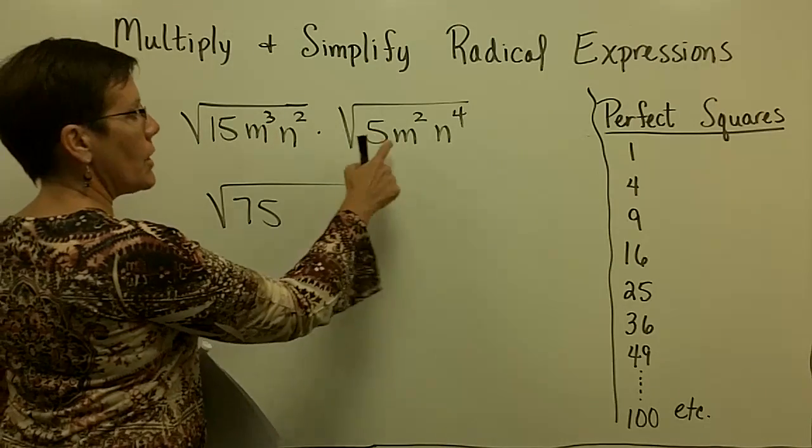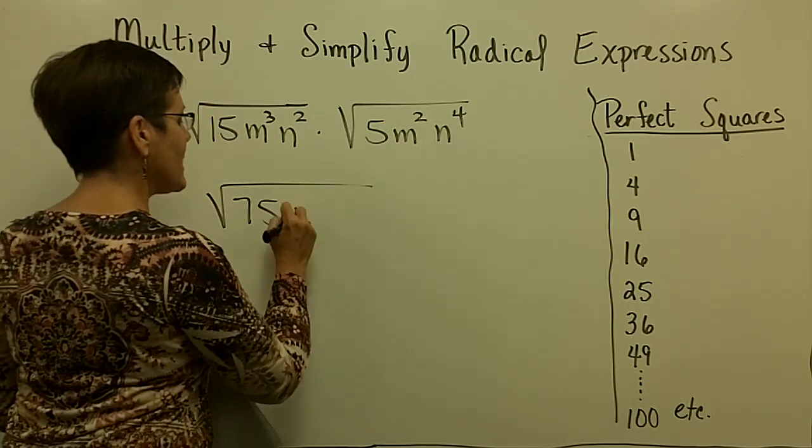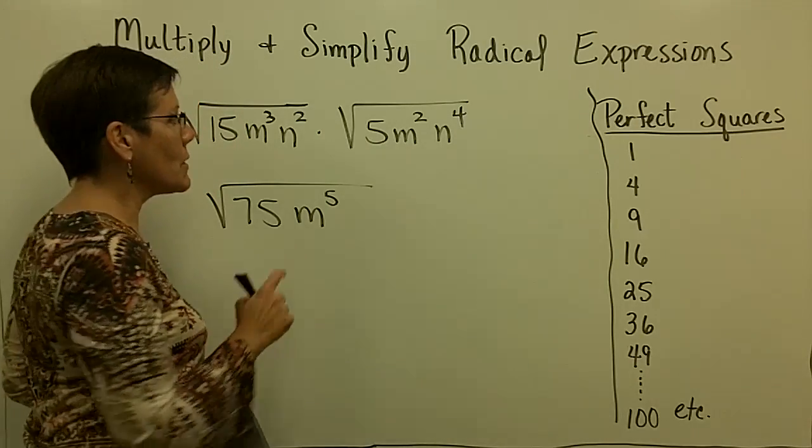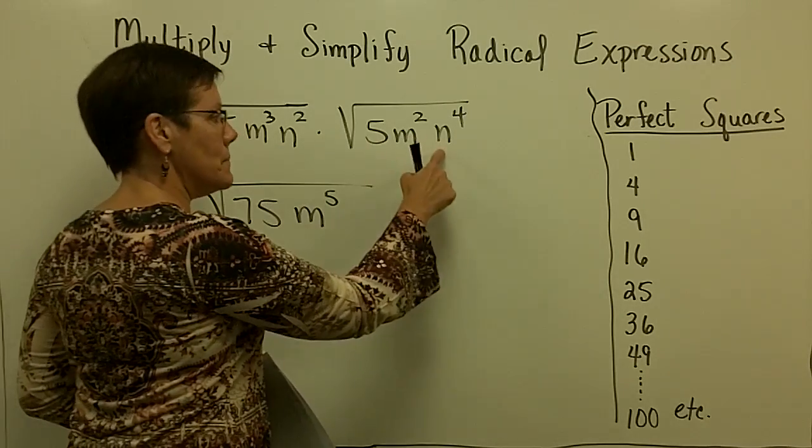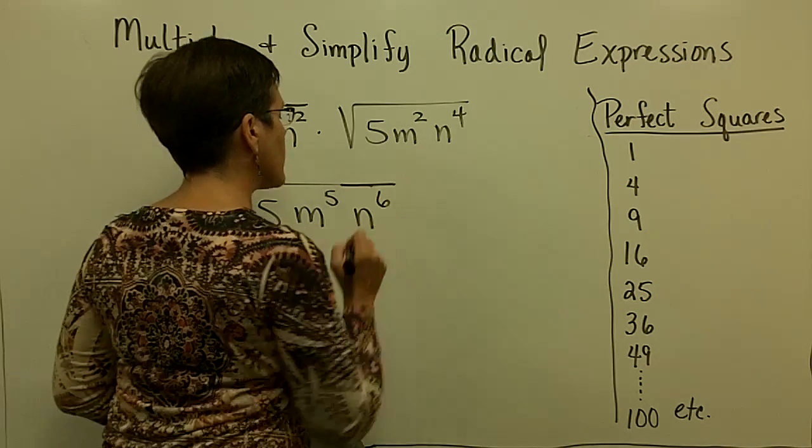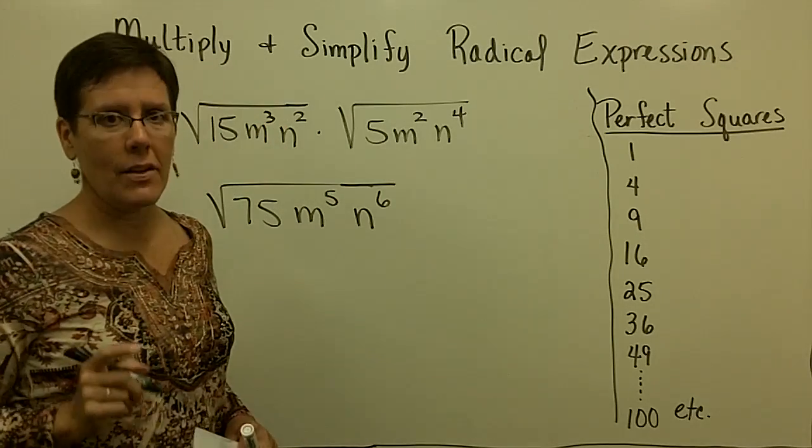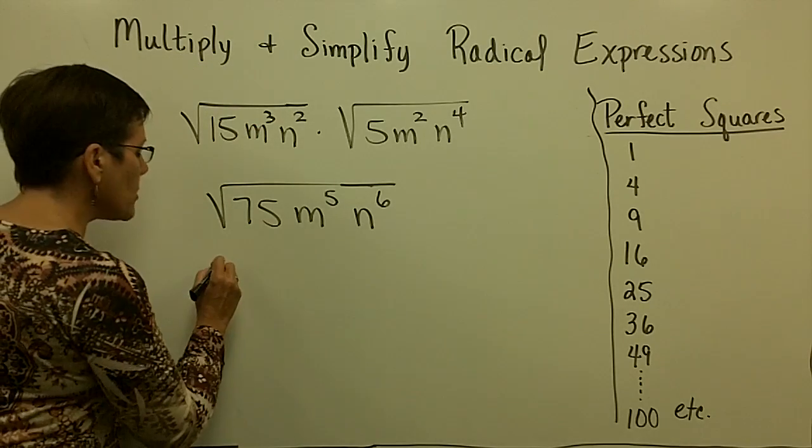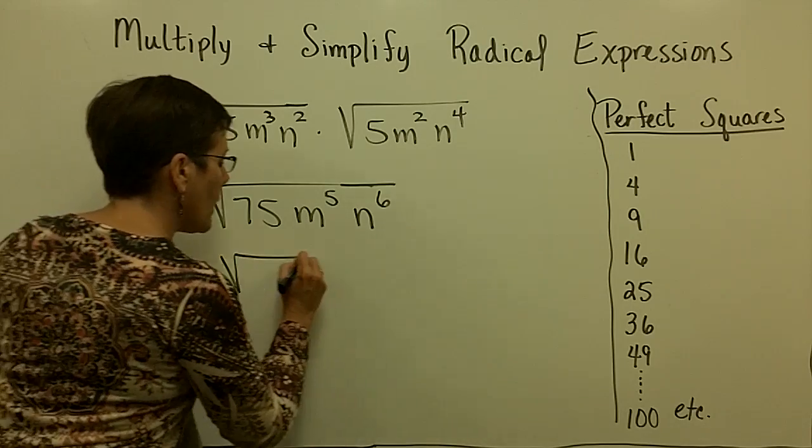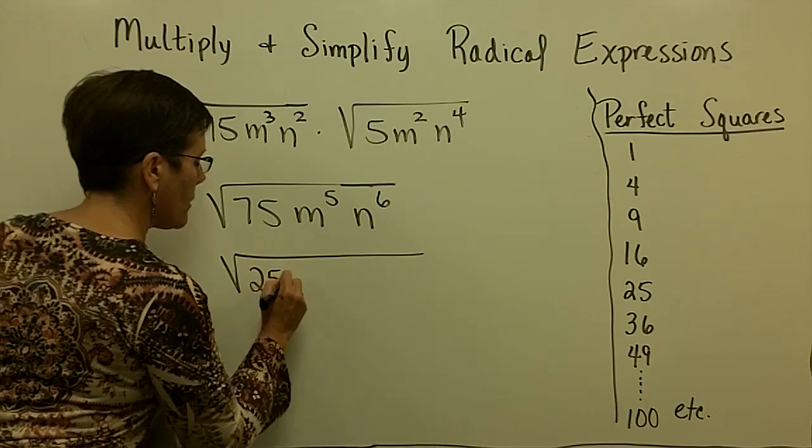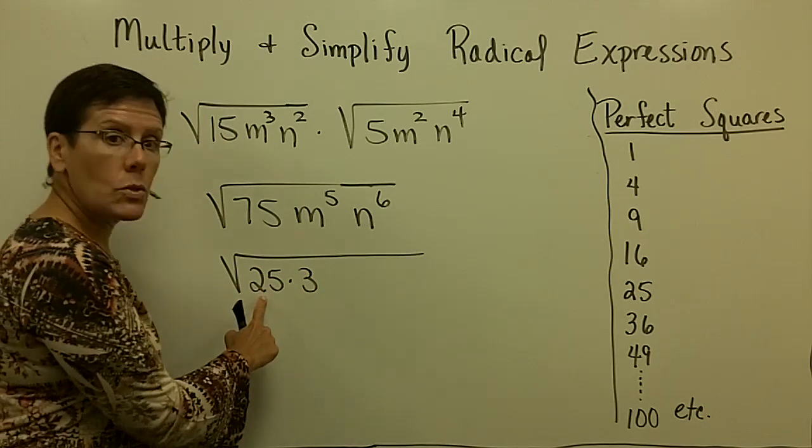And m to the 3rd times m to the 2nd is m to the 5th. I'm adding the exponents. n to the 2nd times n to the 4th is n to the 6th because I'm adding their exponents. And now I'm going to break this up into either its prime factors or I might just go ahead and call 75, 25 times 3 because the square root of 25 is 5.